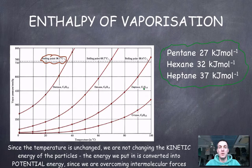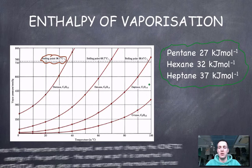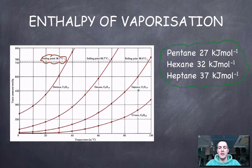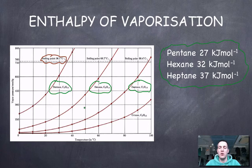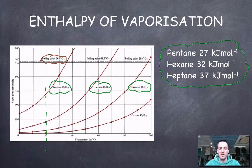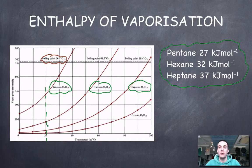Heptane, of these three liquids, has the highest enthalpy of vaporization because it has the strongest intermolecular forces. How can you tell that just from the vapor pressure curves? If you choose a temperature like 20°C, heptane has the lowest vapor pressure, meaning its particles have the most difficulty evaporating — so its intermolecular forces must be stronger.